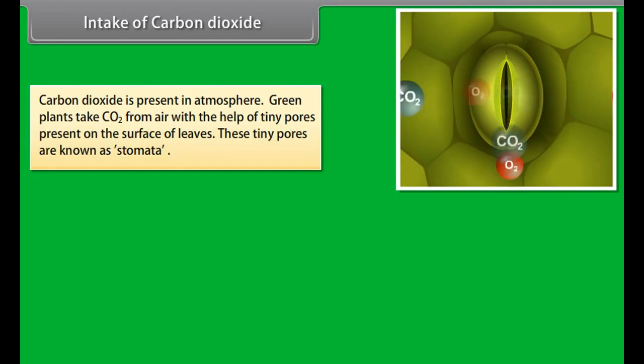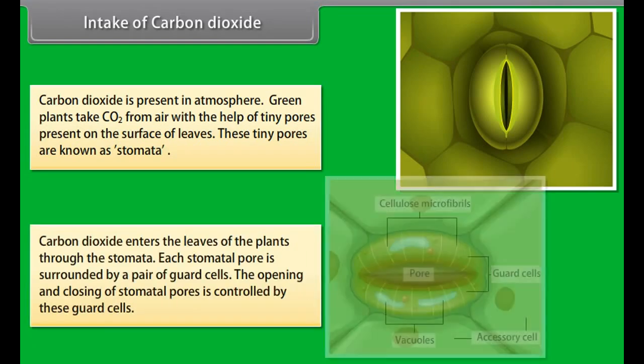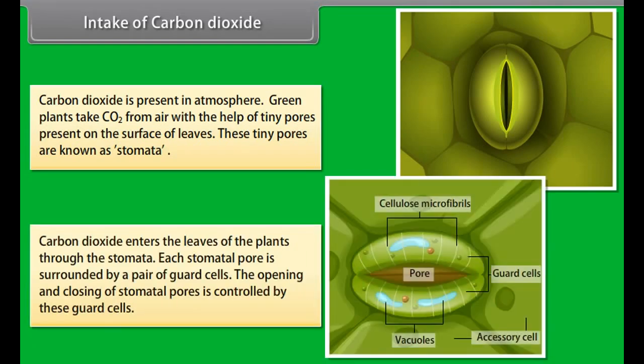The process of photosynthesis takes place in the following three steps: absorption of sunlight energy by chlorophyll, conversion of sunlight energy into chemical energy and splitting of water into hydrogen and oxygen by light energy, and reduction of CO2 by hydrogen to form carbohydrate like glucose by utilizing the chemical energy.